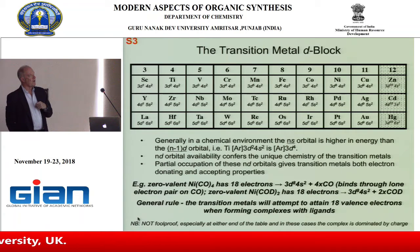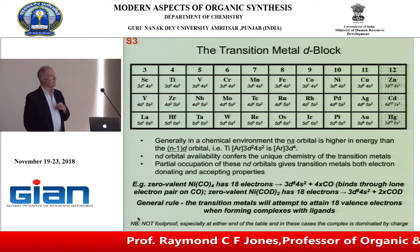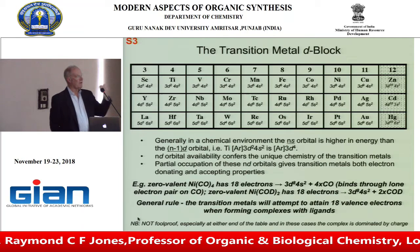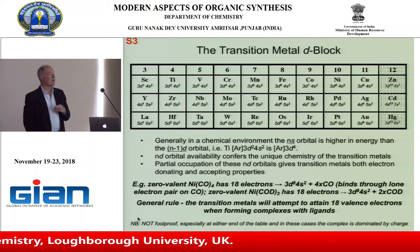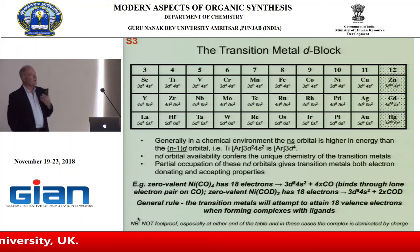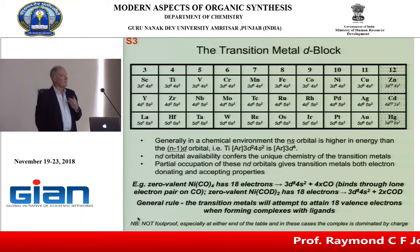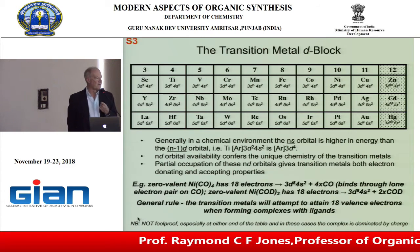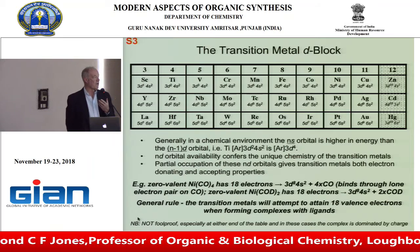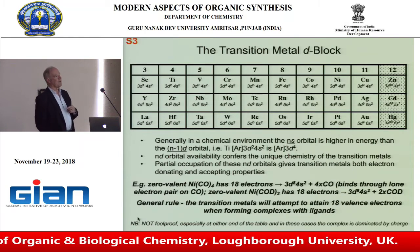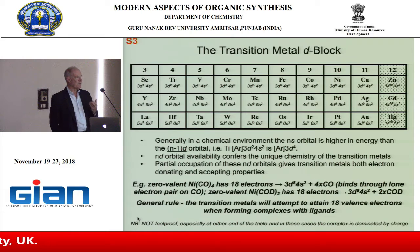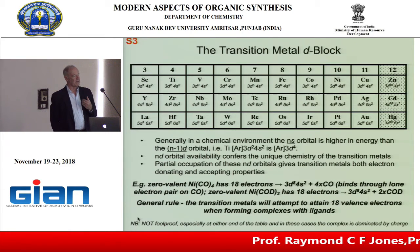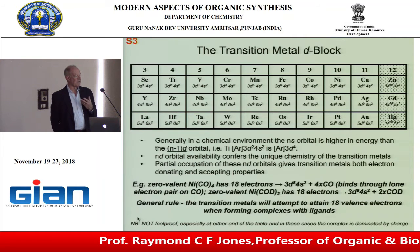If you look at titanium, written as 3d²4s², because the s orbital is really higher in energy we can regard that as 3d⁴ in its outer shell. It's the d orbitals that give the transition metals their unique chemistry. Because those d orbitals are only partially occupied — until we get to zinc, cadmium, mercury on the right-hand side — we get a mixture of filled and empty orbitals, allowing electron donor and acceptor properties.